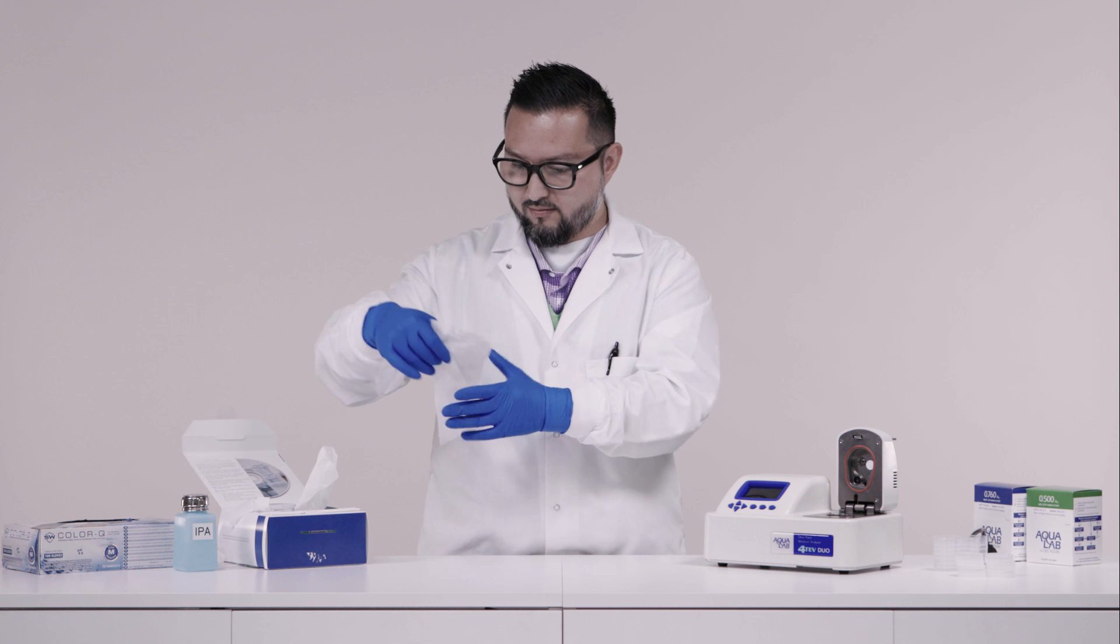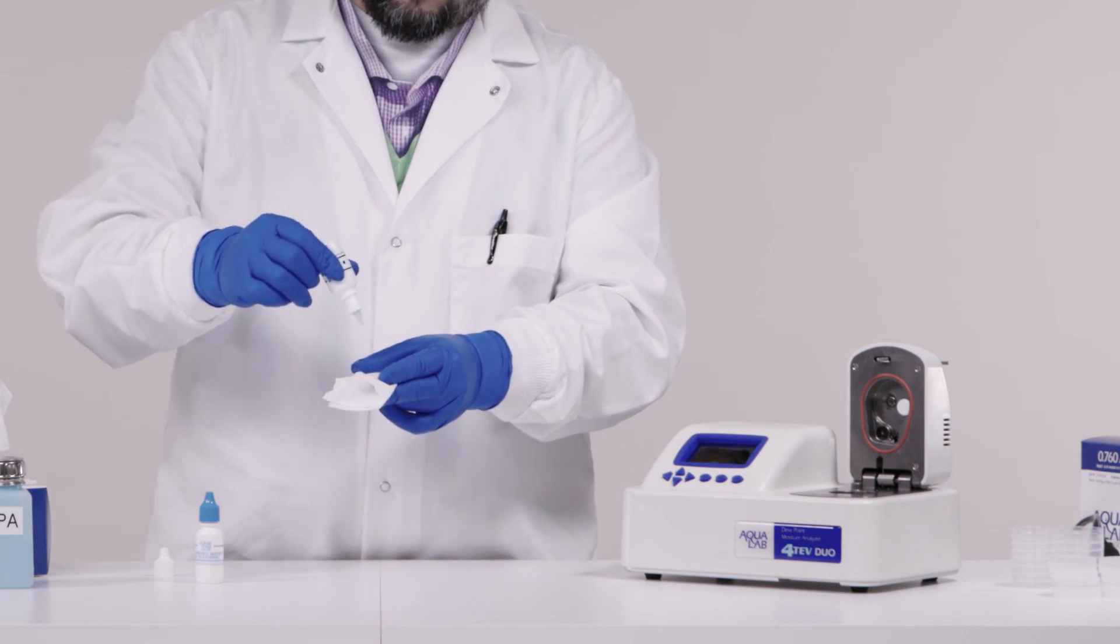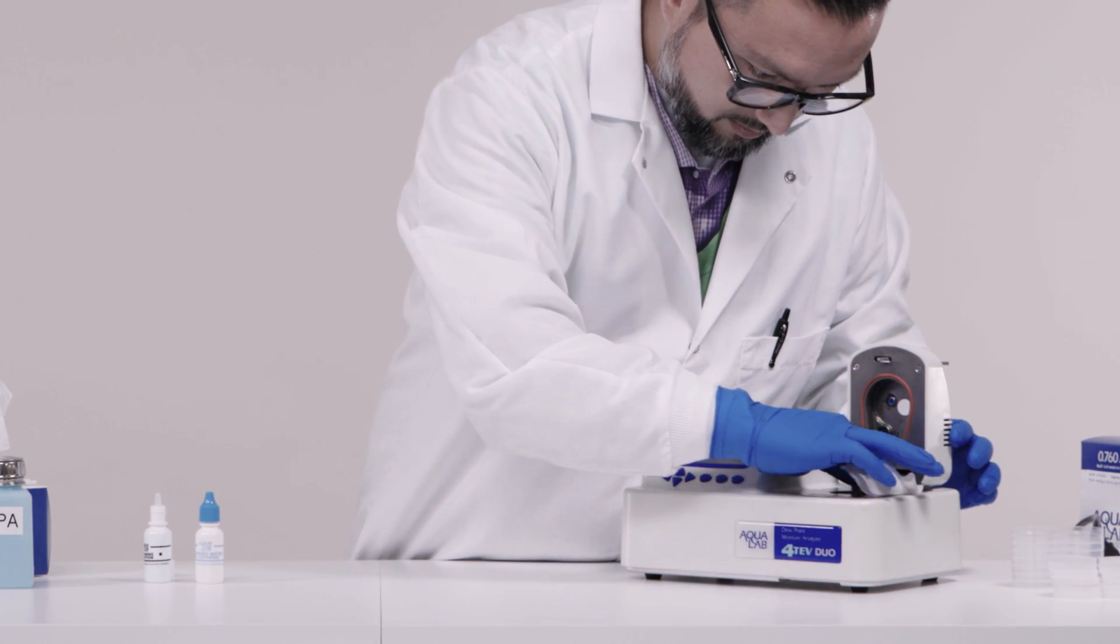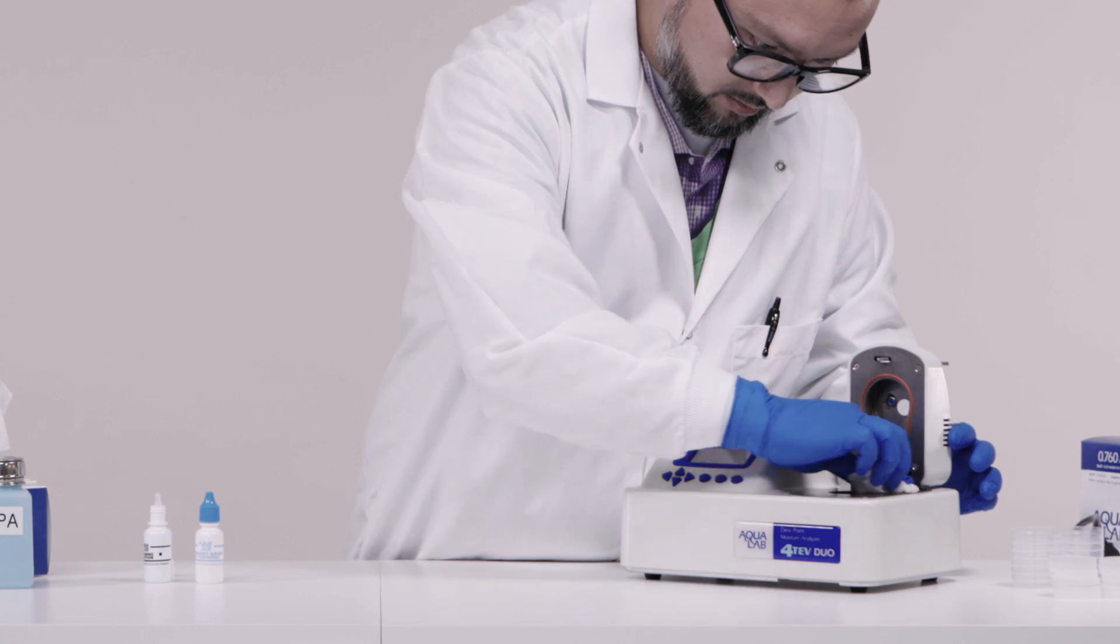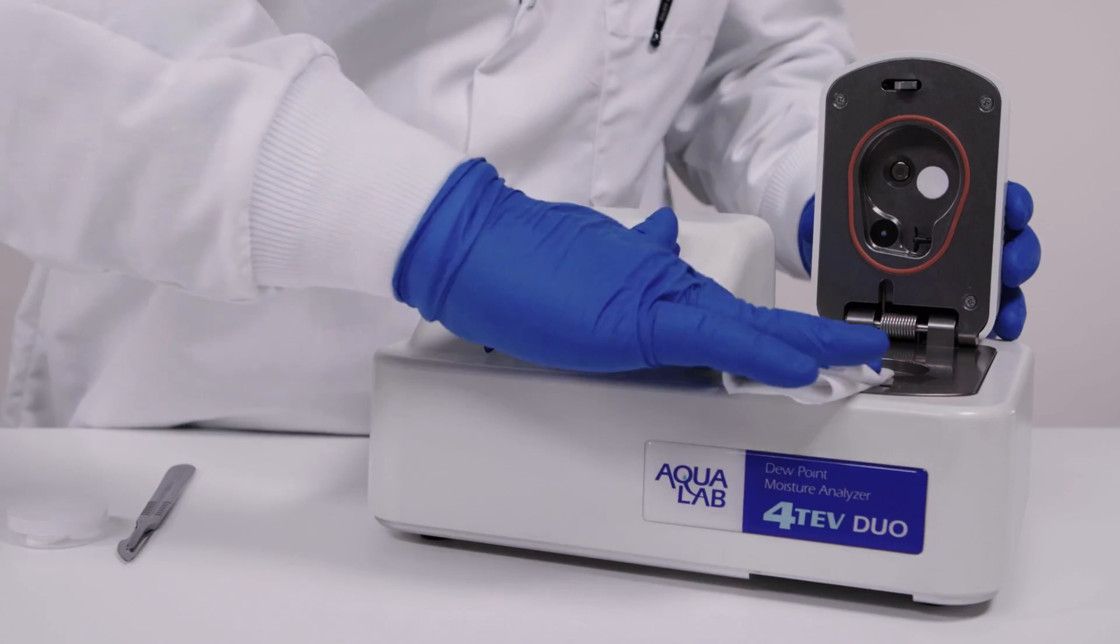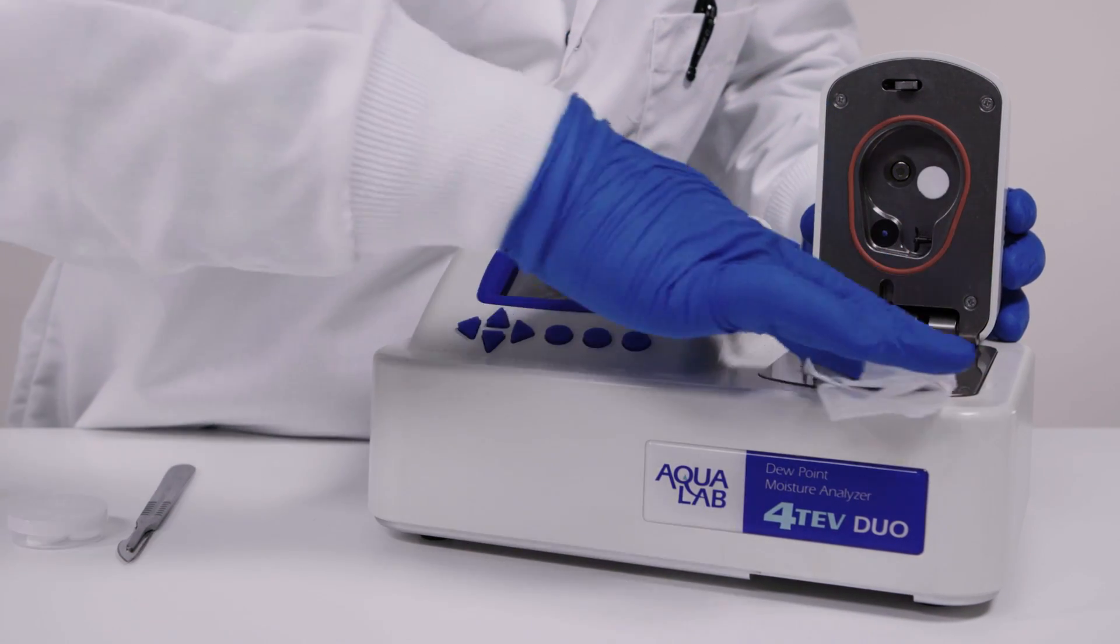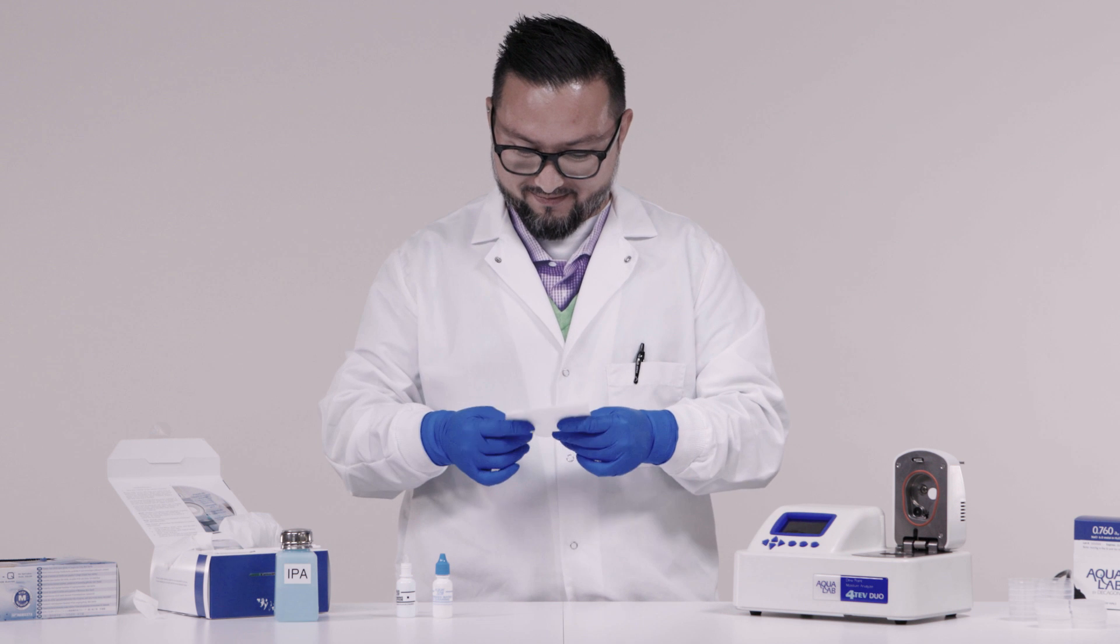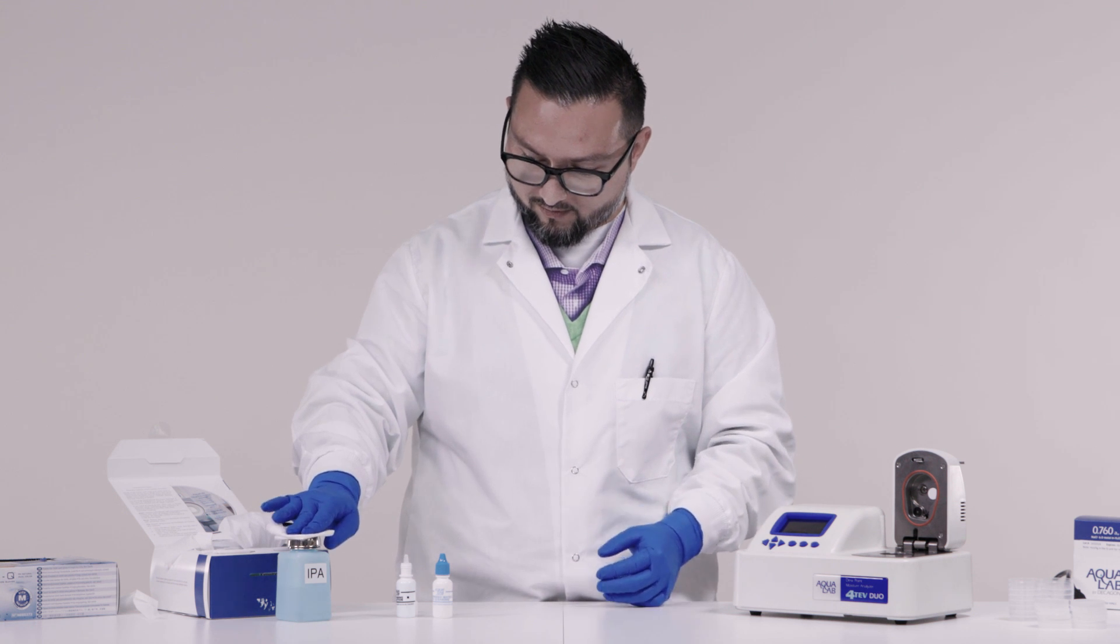Start the cleaning process by moistening a large kimwipe with isopropyl alcohol or Aqualab cleaning solution and then wiping down the surface areas of the sample chamber. Because of regulations, we don't ship isopropyl alcohol in the cleaning kits, but it's often the best cleaning agent, particularly if you're measuring samples with a high fat content. You can use any concentration of isopropyl alcohol greater than 90%. As you clean, be sure to get in the corners and around the red O-ring. Be careful not to bend the fan blades when wiping down the surface area of the sample chamber. Change kimwipes frequently, even if they appear clean. If the kimwipe appears dirty after cleaning, get a new kimwipe and repeat the cleaning process. Be careful not to dip a used kimwipe into the cleaning solution, alcohol or distilled water to avoid cross contamination.